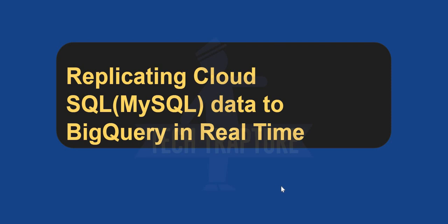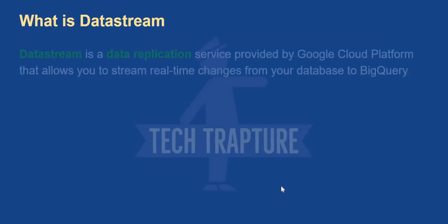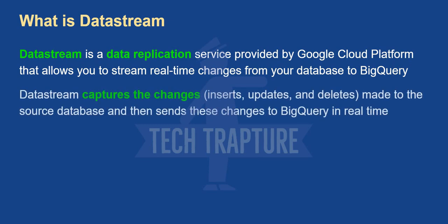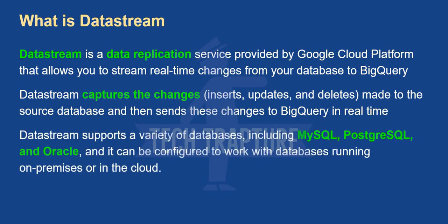Datastream is a data application service provided by Google, launched in 2021. It is used for data replication from your transactional databases to BigQuery, or in the form of files in a Cloud Storage bucket. It also captures changes — inserts, updates, or deletes — made to your source database, whether that's Oracle, MySQL, or PostgreSQL, and replicates those changes to your destination BigQuery table in real time or near real time.